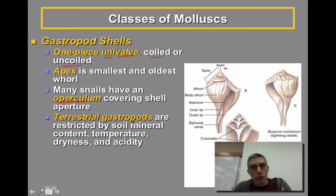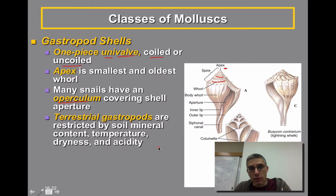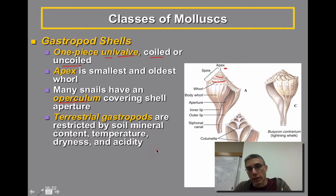Some terrestrial gastropods are restricted by soil mineral content, temperature, dryness, and acidity. They are very specific to the environments they need to live in. We're talking about a soft-bodied animal, so there needs to be a way to make sure that the moisture content is maintained. They have very tight restrictions as to where they can live.